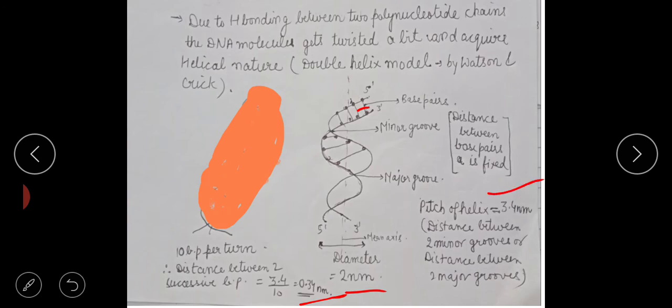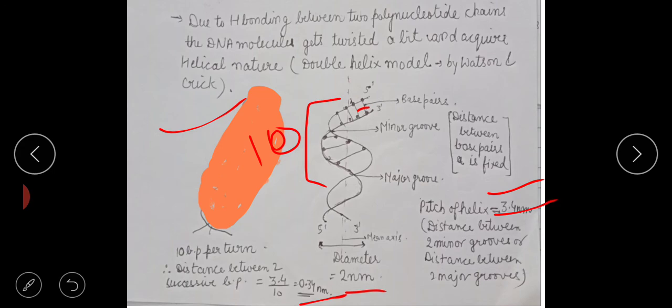To summarize B-DNA characteristics: first, it has a right-handed twist. Second, the pitch of the helix is 3.4 nanometers. Third, the distance between two base pairs is 0.34 nanometers. Fourth, there are 10 base pairs per turn. Fifth, the diameter is 2 nanometers. Most naturally occurring DNA is B-DNA.